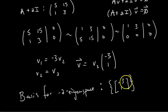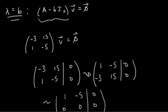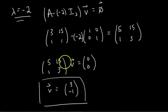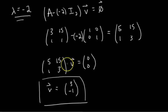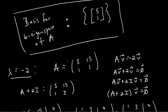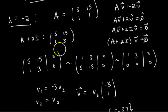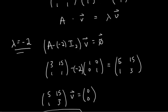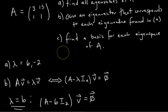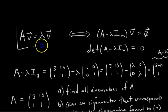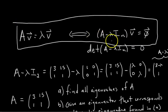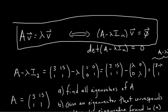We can check: one eigenvector would be -1 times [-3, 1], giving [3, -1], which is exactly what we found by inspection earlier. So [3, -1] is an eigenvector of A with eigenvalue negative 2. The key takeaway — write this down — is: the null space of A minus lambda·I_N is the lambda-eigenspace of A. That's crucial.